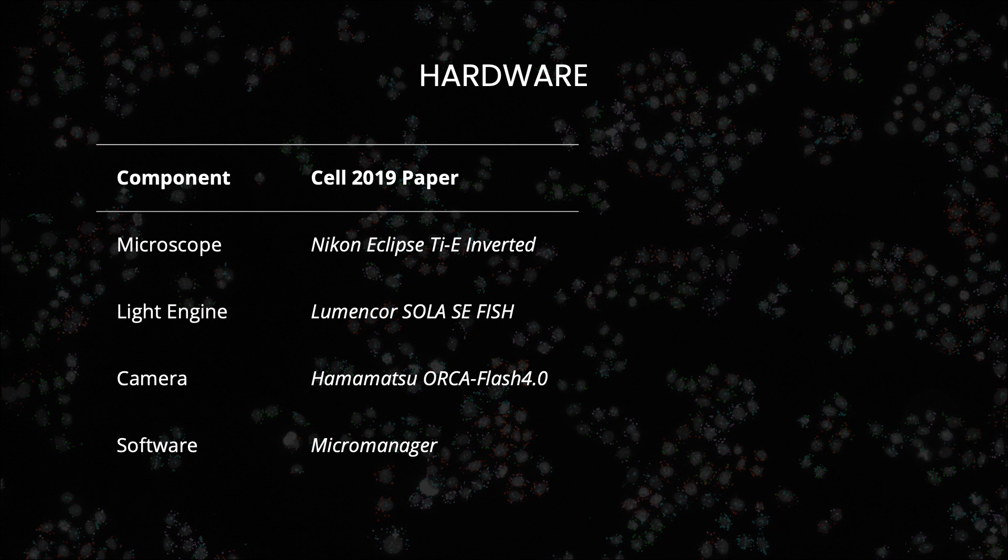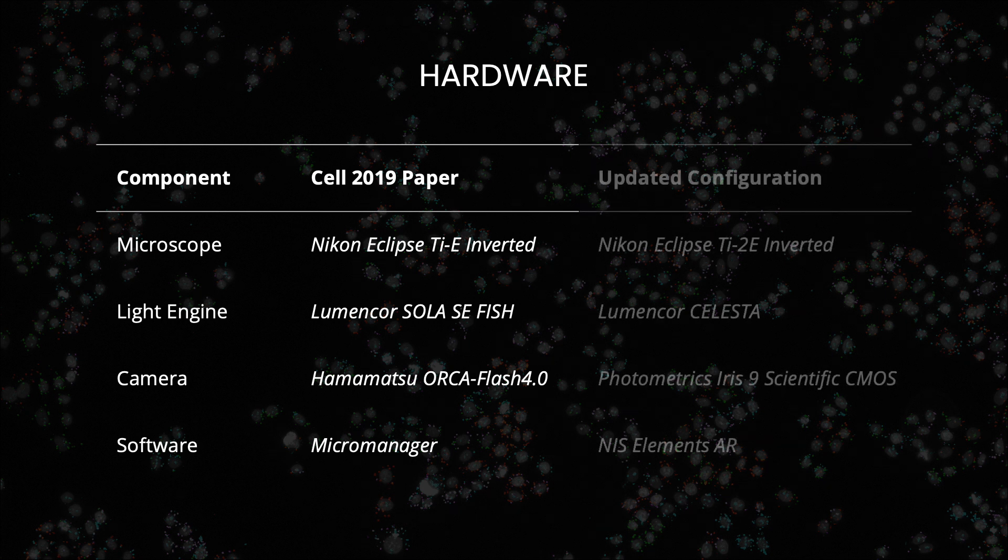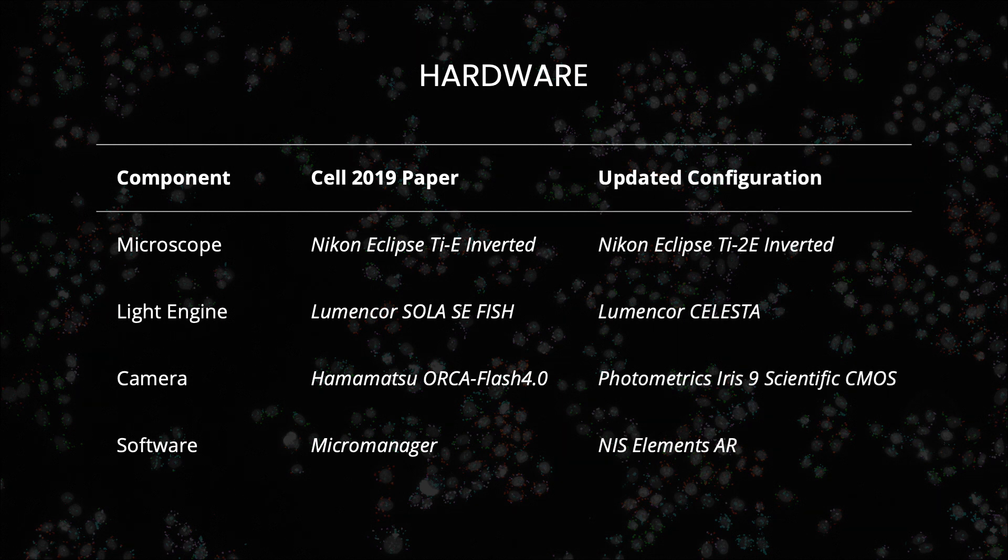Although data for our 2019 Cell paper were acquired using a Nikon TiE, LumenCore Sola light engine, Hamamatsu Flash 4 camera, and Micromanager software, we have since updated our hardware for higher imaging throughput. In particular, we use a Nikon Ti2 with a powerful Celesta multi-laser source to increase image acquisition speed, as well as an Iris 9 camera with a 0.7x relay lens to increase the field of view. For data acquisition, we use NIS elements with the jobs package for easy configuration of imaging sites in multi-well plates.